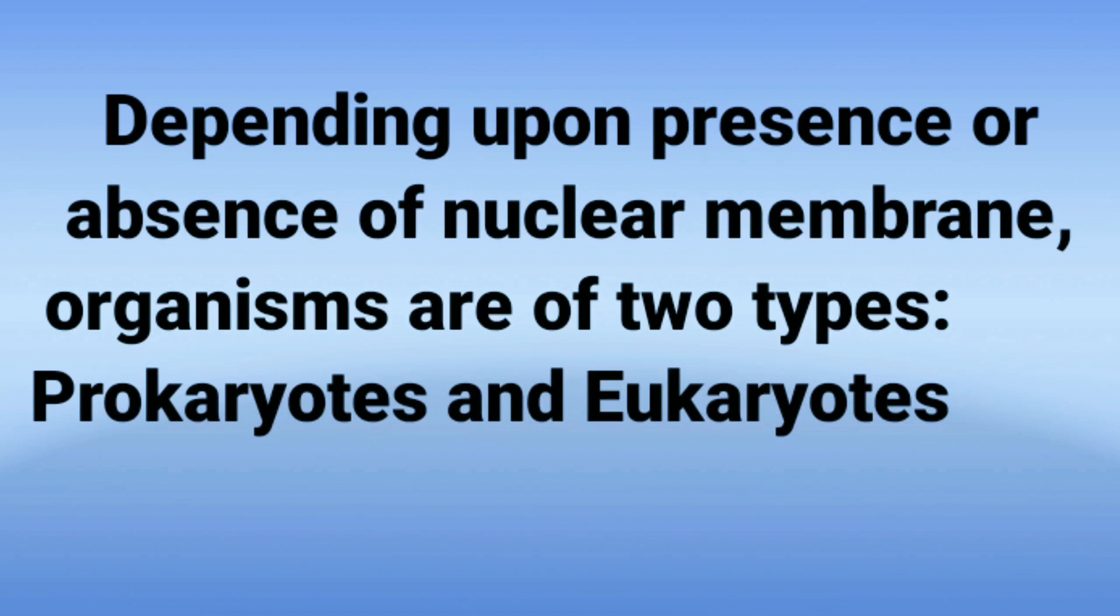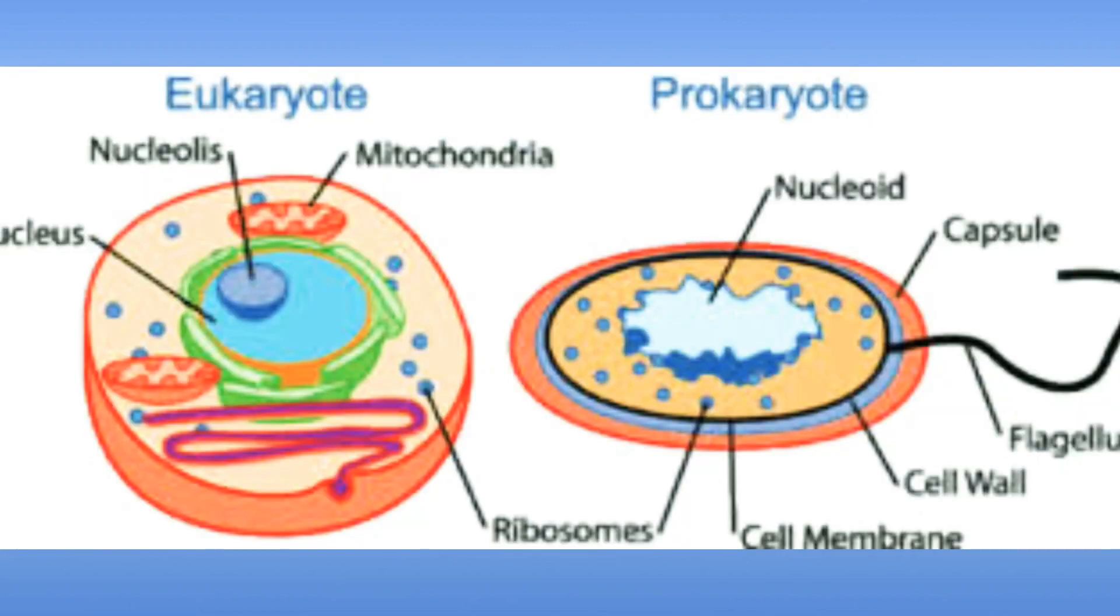Depending upon presence or absence of nuclear membrane, organisms are of two types: prokaryotes and eukaryotes. Prokaryotes are the organisms whose nucleus is not having a nuclear membrane, so we call it as nucleoid. And eukaryotes are the organisms whose nucleus is bounded by a definite membrane. Likewise, the prokaryotes have cell organelles which are also not bounded by unit membrane, which is found in case of eukaryotes.